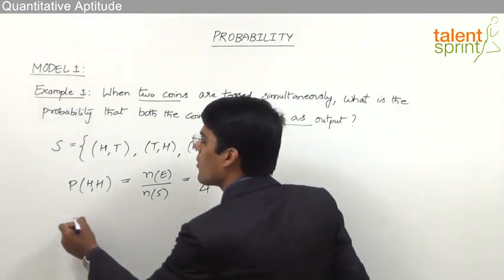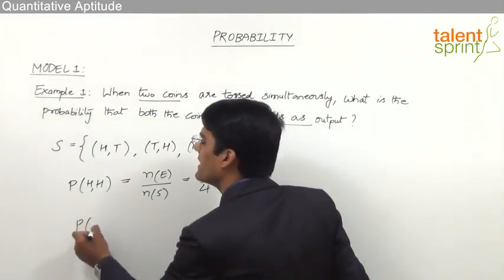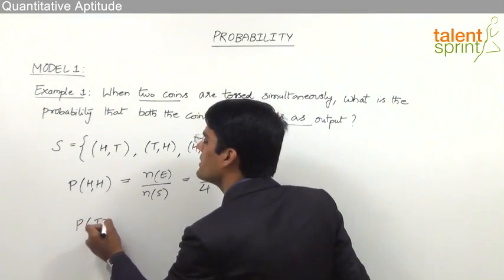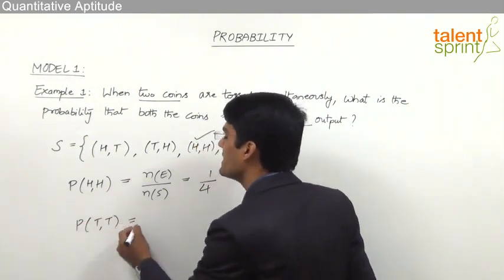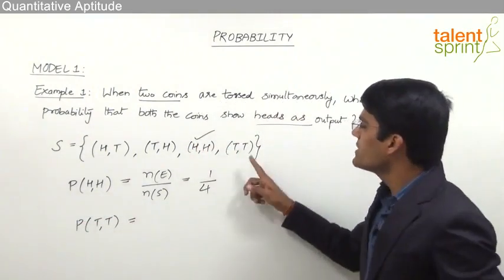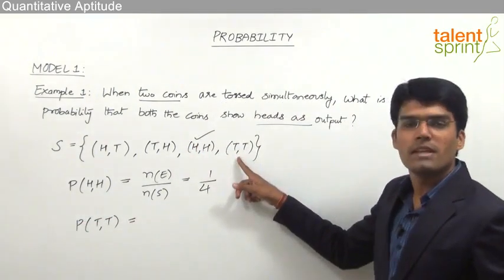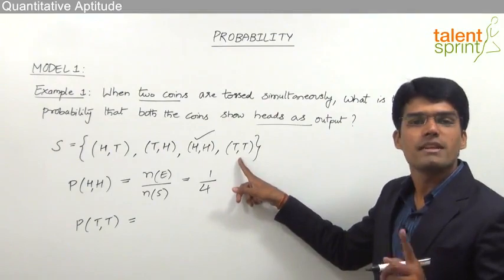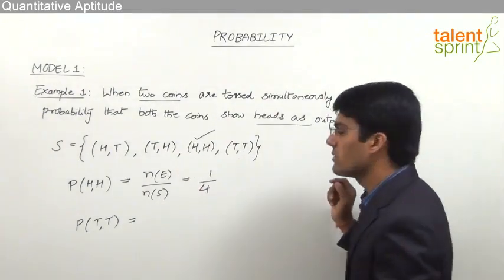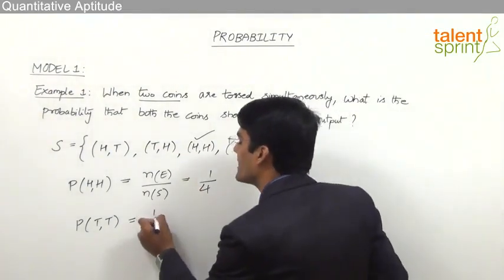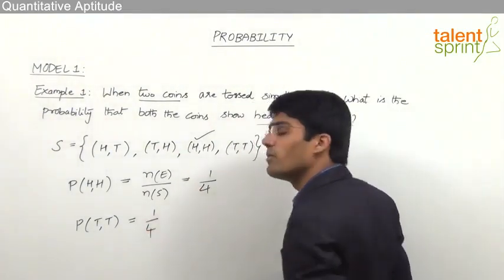Likewise, what is the probability that both the coins show tails? Again, there is only one outcome in which both coins can show tails out of a total of four. So the answer here is 1/4.